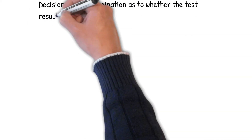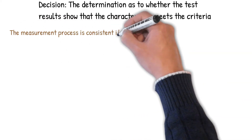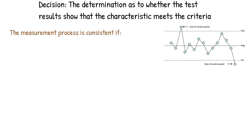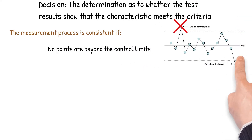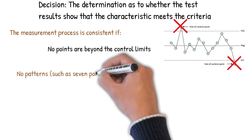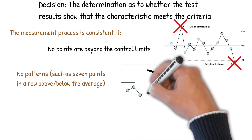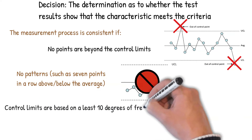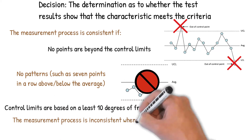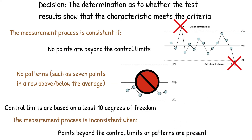Then you have the decision — determination as to whether the test results show that the characteristic meets the criteria. The measurement process is consistent if there are no points beyond the control limits on either the X or the moving range chart, and no patterns such as seven points in a row above or below the average. The measurement system is not consistent when points beyond the control limits or patterns are present. You also need at least 10 degrees of freedom in the data.